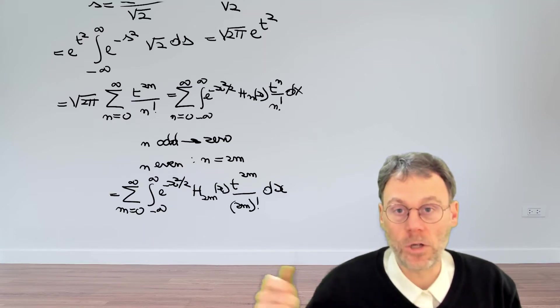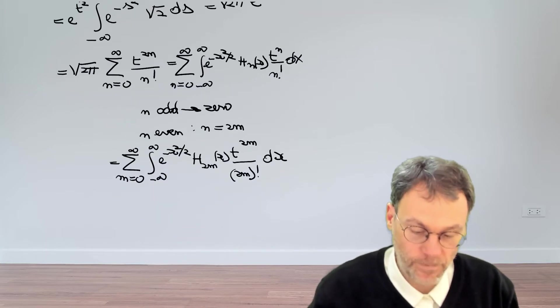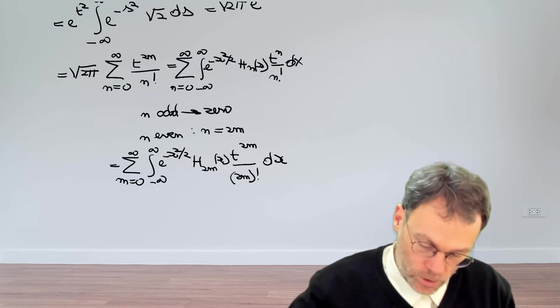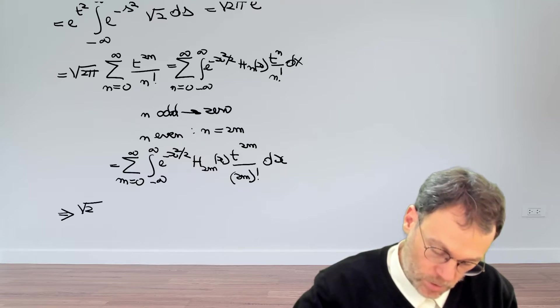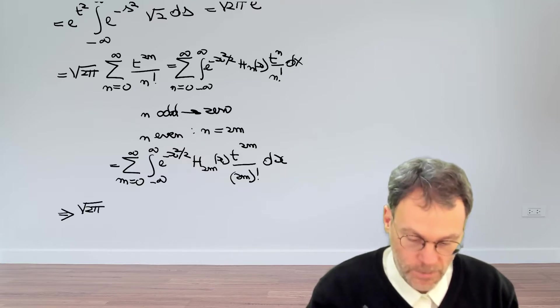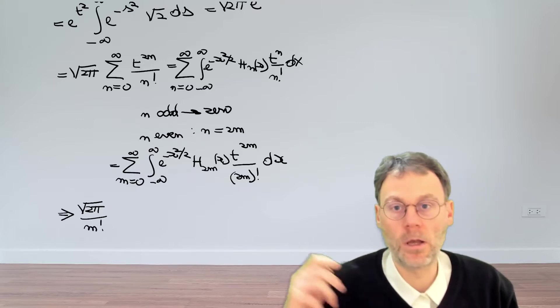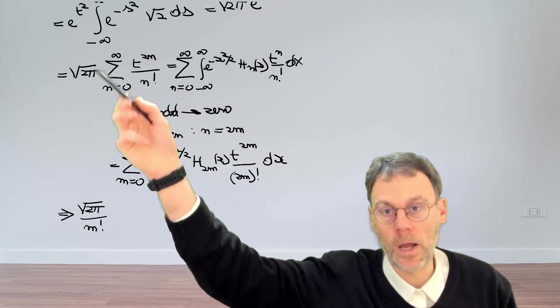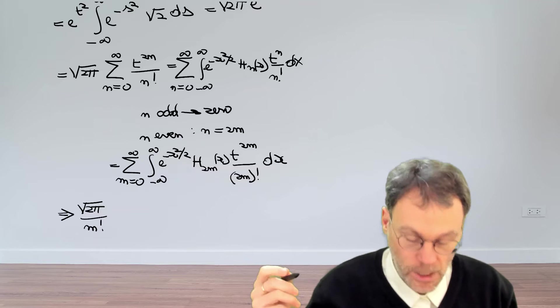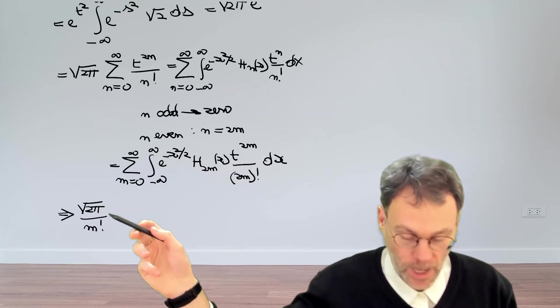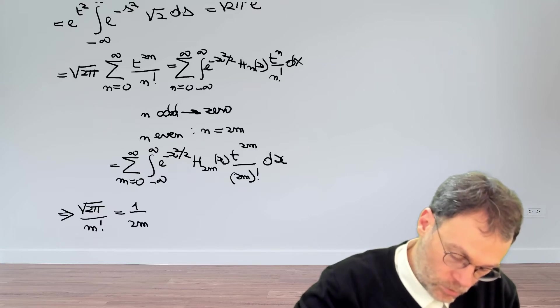Now we're basically in a position to just read off what the correspondence is in case n is even. So we just look at a certain power of t. We get that the square root of 2 pi divided by m factorial. So it doesn't really matter whether we call this thing now n or m because this is just a dummy summation index anyhow. So on the left hand side we have this and on the right hand side we have 1 over 2m factorial.